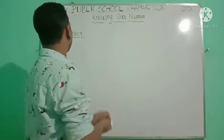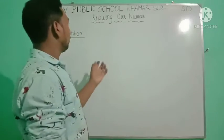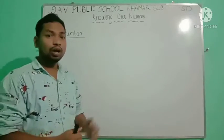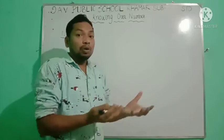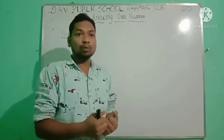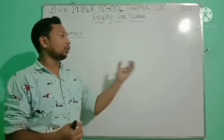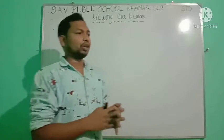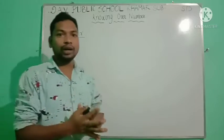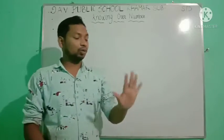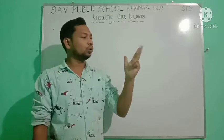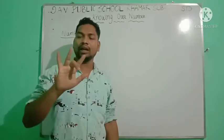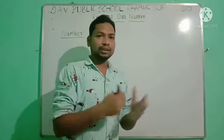Now we are discussing about how numbers help us to count. We are using numbers to count anything. For example, how many fingers are on our hand? We are counting like that: 1, 2, 3, 4, 5, 6, 7, 8, 9, 10 — like this.